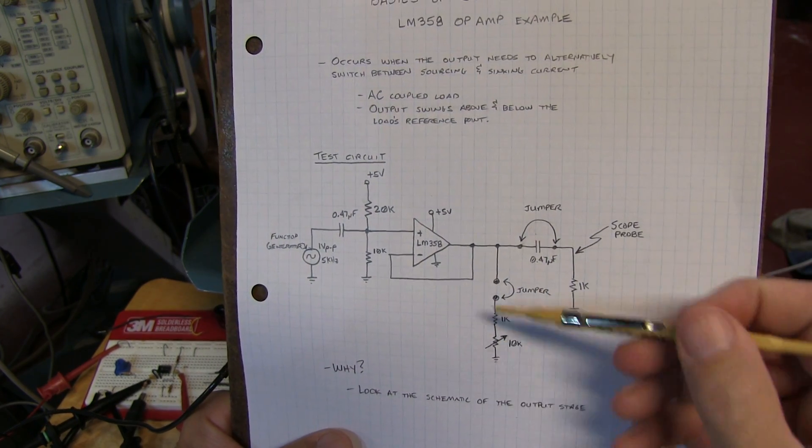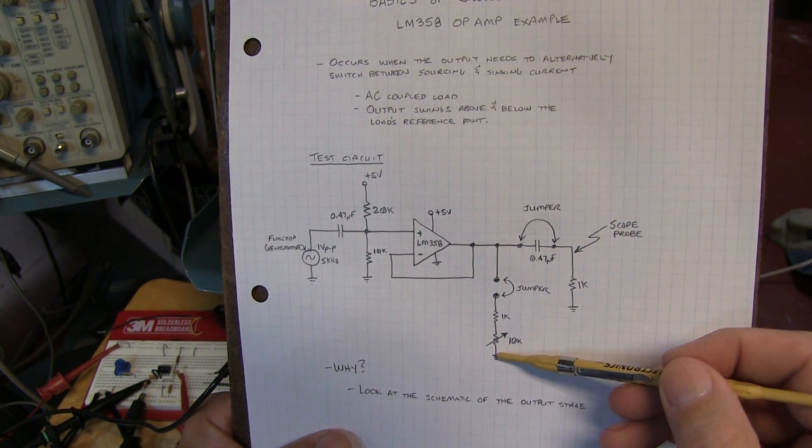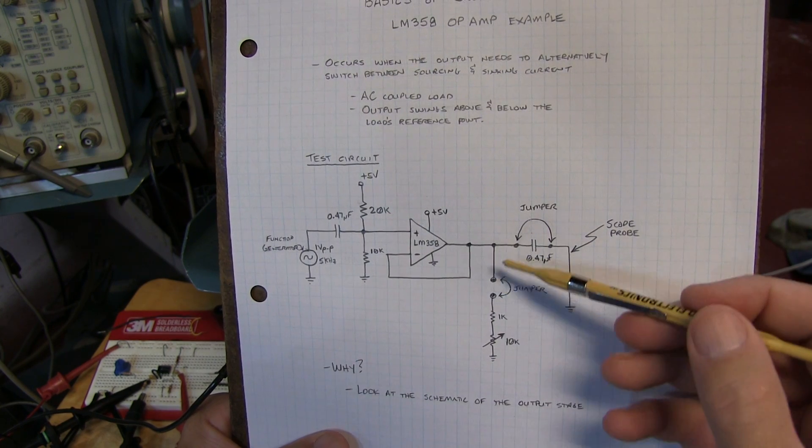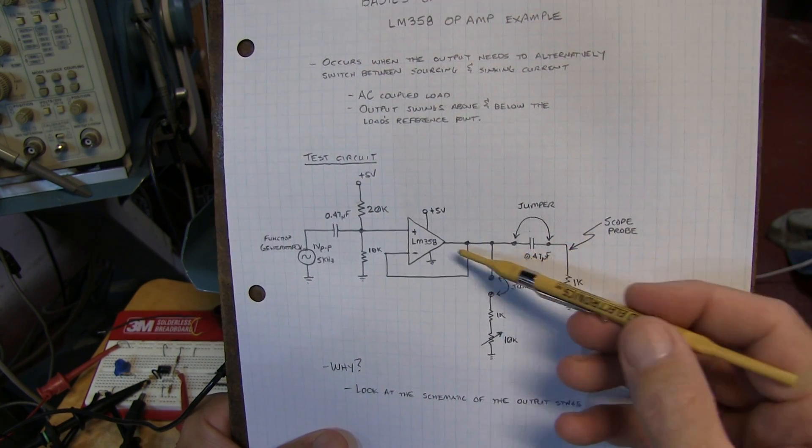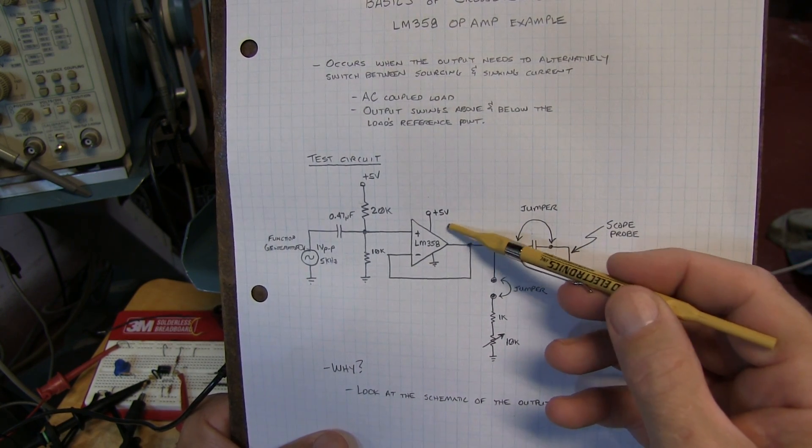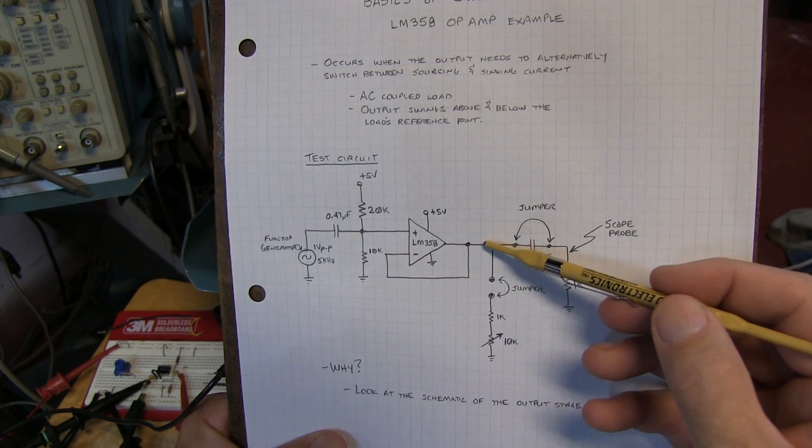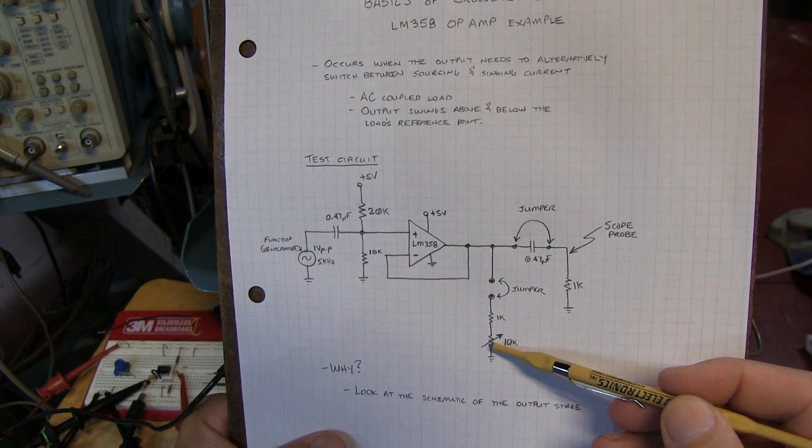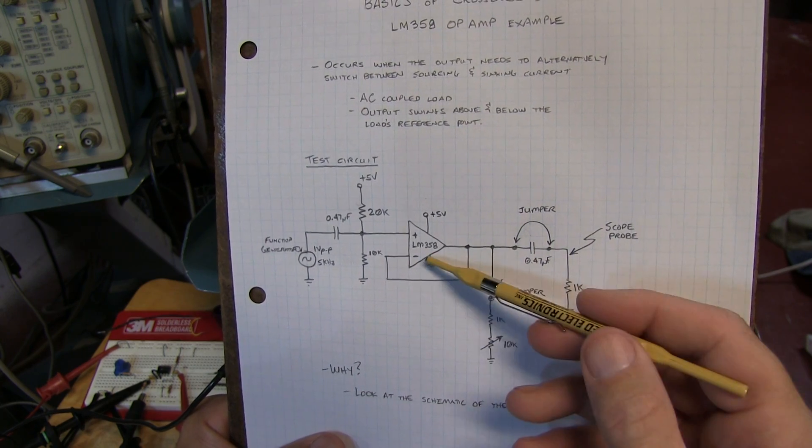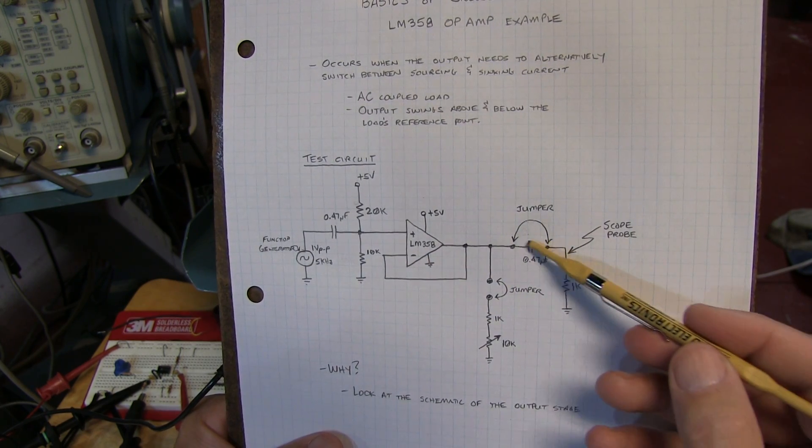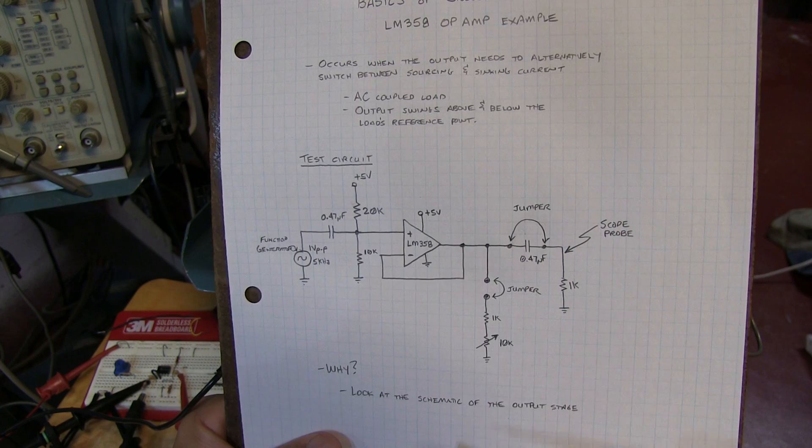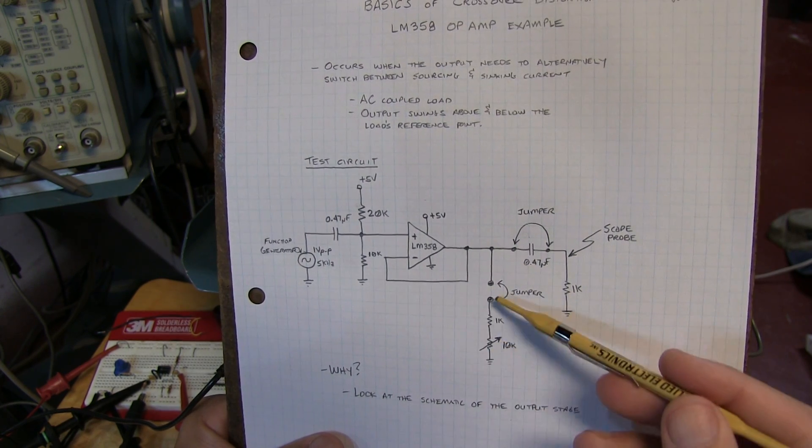So if we provide a ground reference load, a DC load, ahead of the AC coupling capacitor, we can keep those NPN output transistors always conducting and sourcing current this way and never have the output state switch to sinking current because the current sink will be handled by the load resistor here. So let's take a look at that.